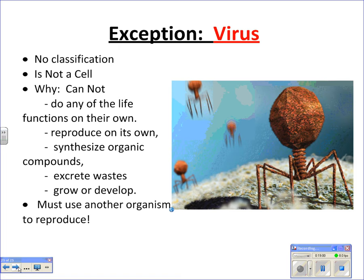Here's the end of our presentation — the exception to the cell theory and to our classification system: the virus. We have no classification for it; it's not a cell. The reason it's not part of the cell theory and not in our classification system is that it can't perform any life functions on its own — it can't reproduce independently, synthesize organic molecules, excrete waste, or grow and develop. It can reproduce, but only by using our cells or other cells to do it. That's why a virus is an exception to the cell theory. Make sure you have all your video notes, rewind if needed to fill in your table, and remember to study your video sheet for your in-class quiz.